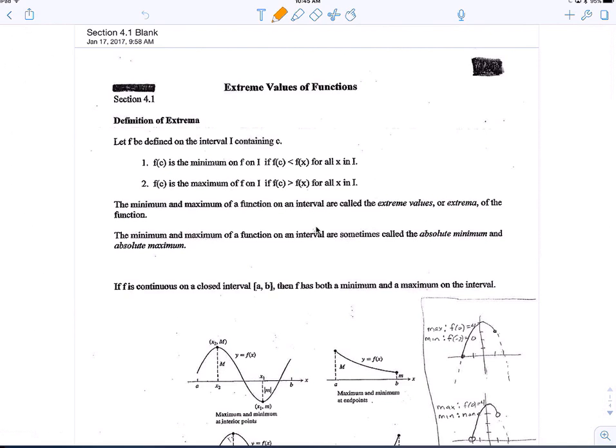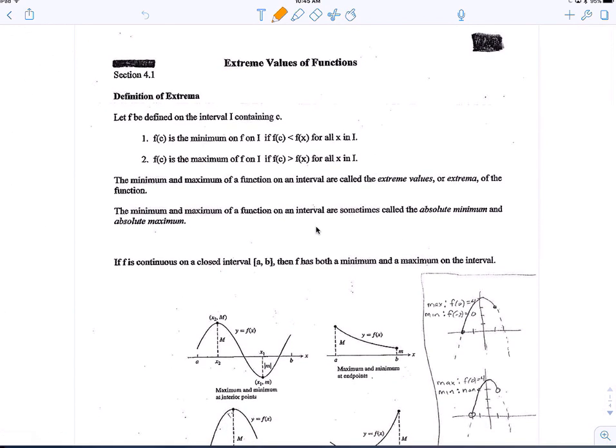f of c is the min on that particular interval if f of c is less than f of x for all the x in i, and then it's also the maximum if f of c is greater than f of x for all the x in your interval.